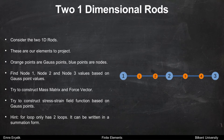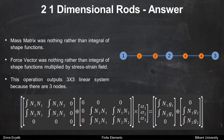Now take a look at this more complex example. These are our elements to project. Again, orange points are Gauss points and the blue points are nodes. Find node 1, node 2, and node 3 values based on the Gauss point values. Try to construct the mass matrix and force load vector, and try to construct the stress-strain field function based on Gauss points. In this situation we have two loops, and it can be written in summation form. The mass matrix is nothing other than an integral of shape functions, and the force vector is nothing other than an integral of shape functions multiplied by a stress-strain field. This operation outputs a 3x3 linear system because there are only three nodes.